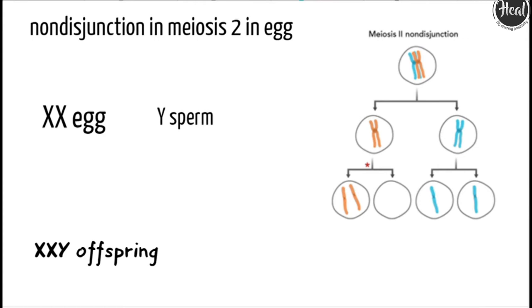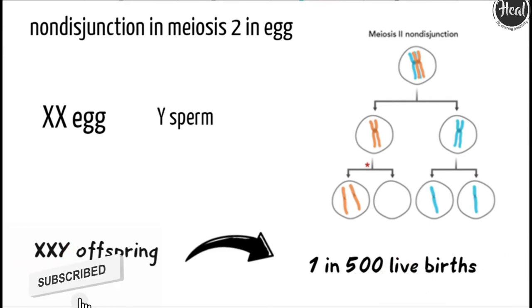This XXY chromosome arrangement is one of the most common genetic variations from the XY karyotype, occurring in about 1 in 500 live male births.